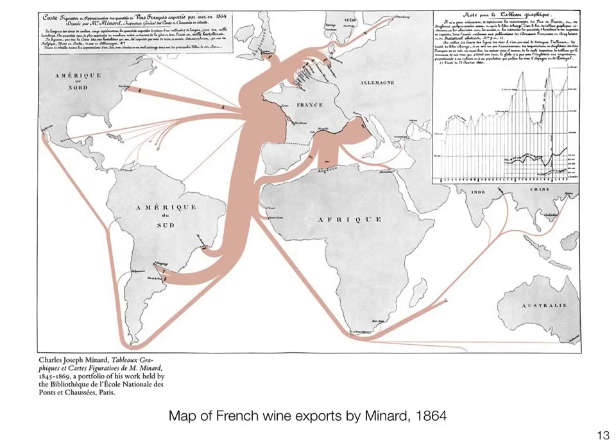Here is a more lighthearted visualization by Minard — a map of French wine exports. The thickness of these bands laid across a slightly distorted world map encodes export volumes. In the north of France, the ports as well as the Netherlands and Belgium appear a bit bigger to make space for these bands, and England is positioned further away. In the top right corner, you can also see a temporal development of wine exports.